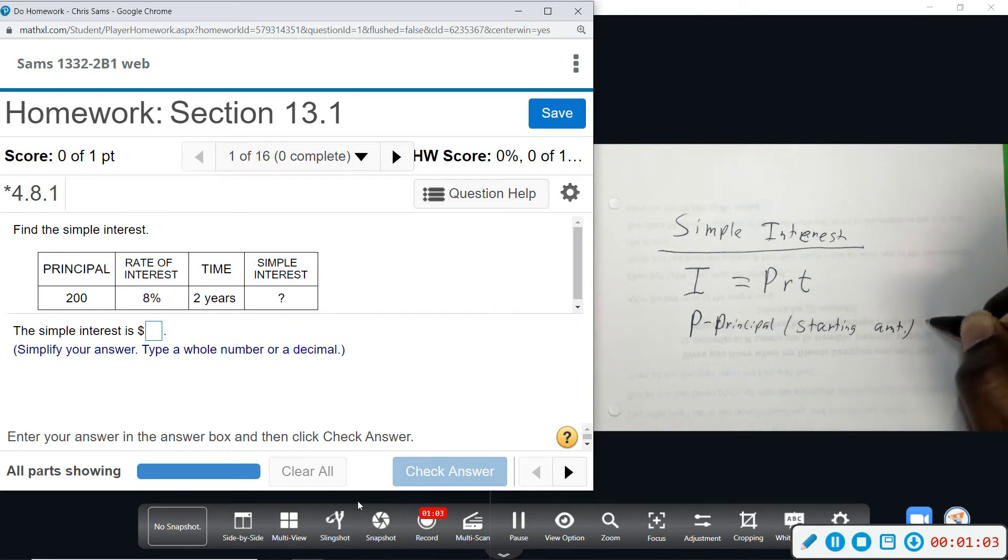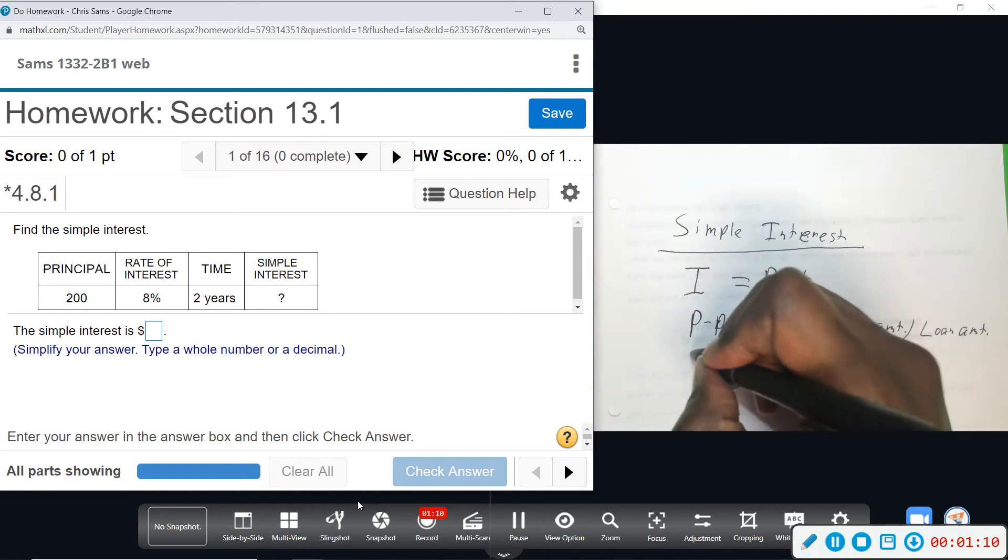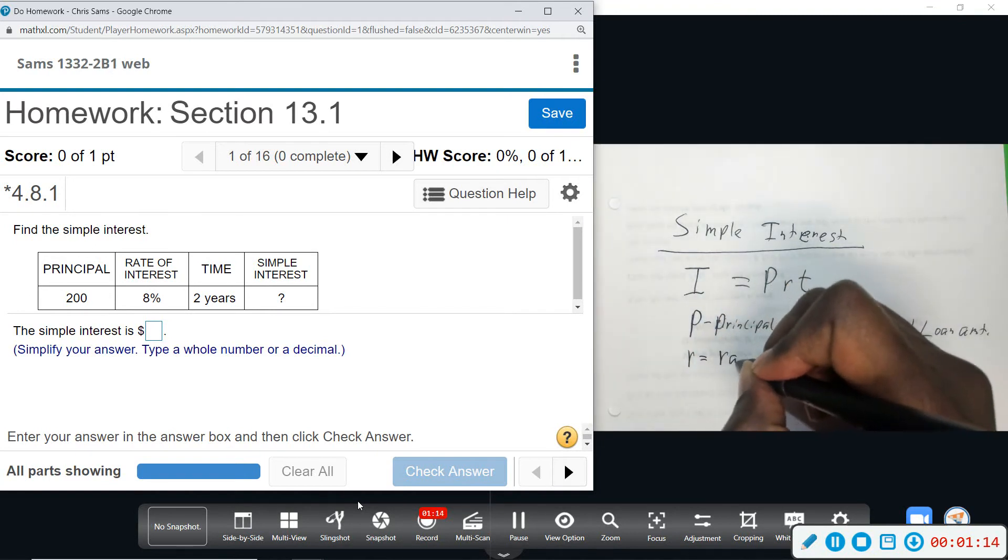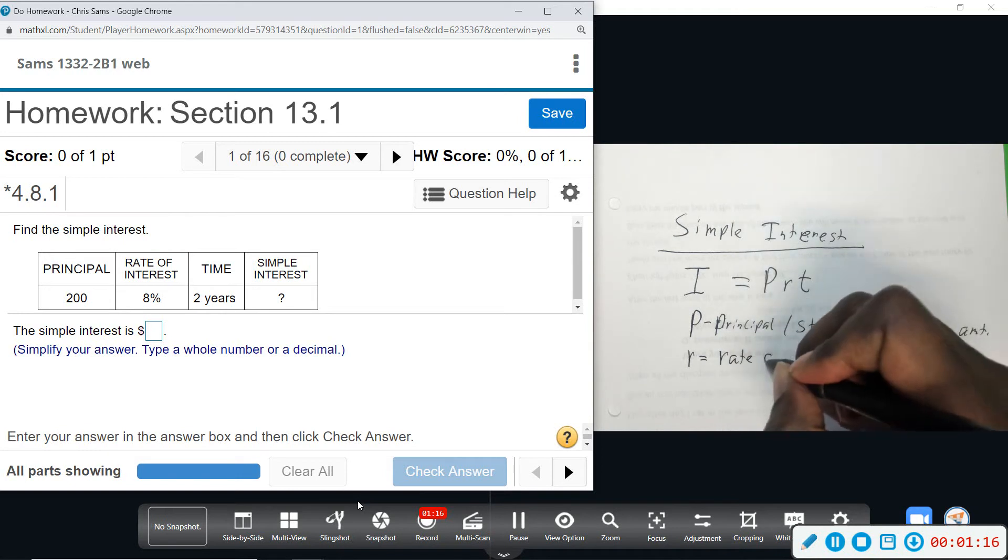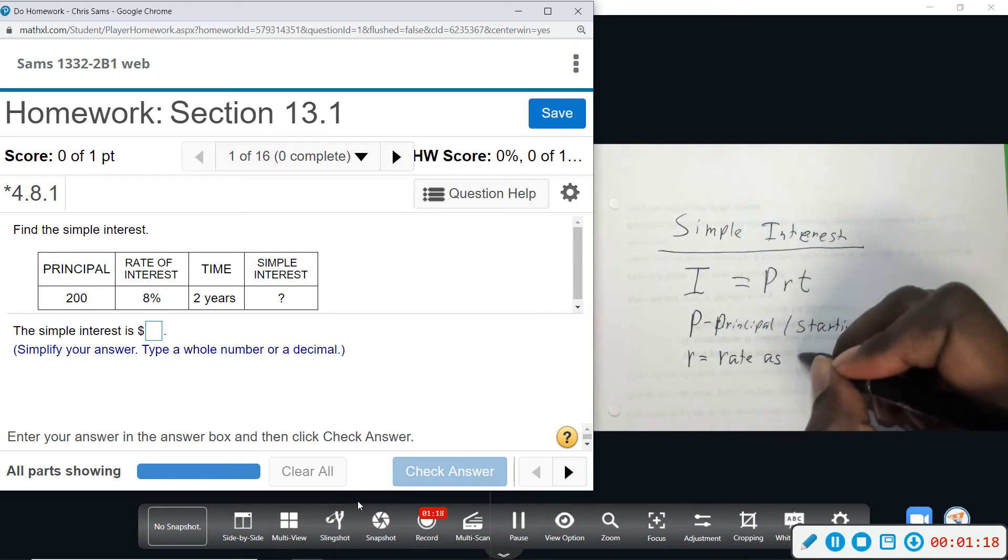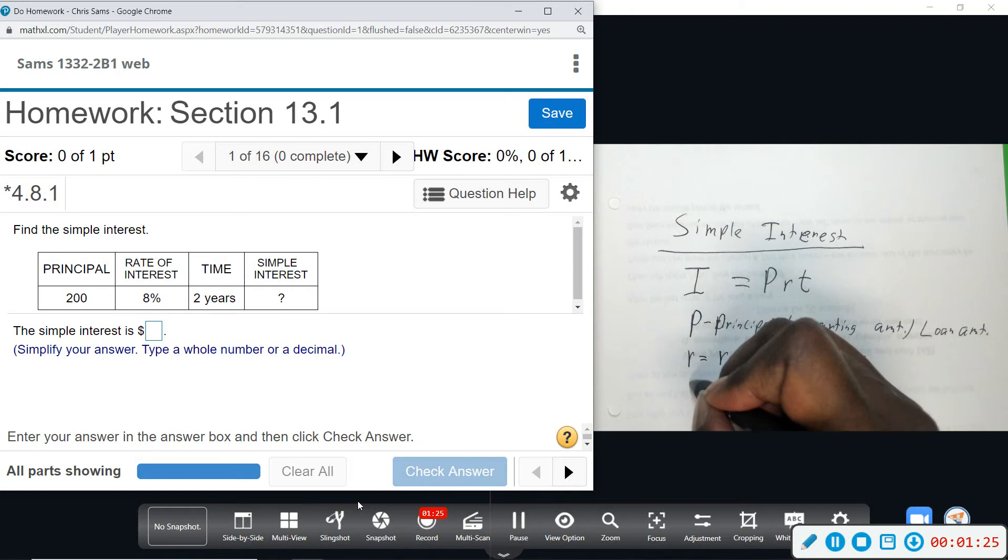May call it loan amount. Okay, so any one of these. All right, R is the rate as a decimal, so how much interest are you getting. All right, and then T is time in years.